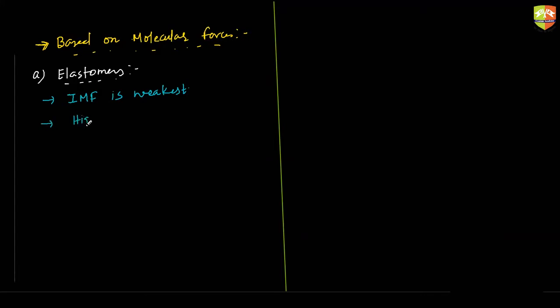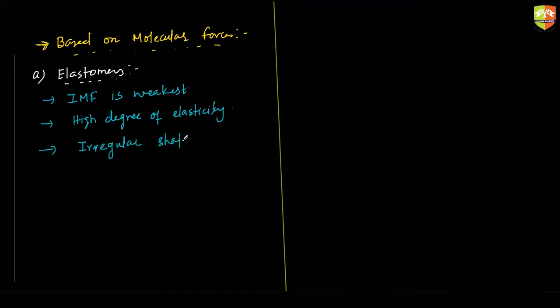Because of weak intermolecular forces, elastomers have a high degree of elasticity. They also have the ability to stretch up to ten times their normal length. The structure is irregular in shape, and there are few cross links present.